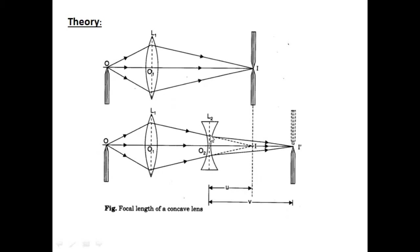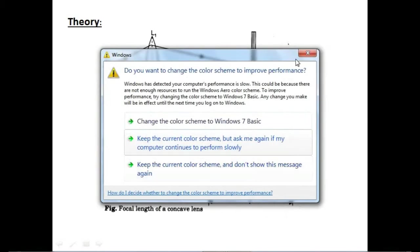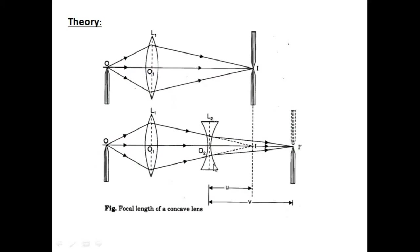Now, a concave lens L2 is placed in between the convex lens and the image I. As we know, the concave lens diverges the ray of light, so the image is now formed at I dash. Here, I is the virtual object and I dash is the real image. The distance between O2 and I dash gives the value of V.